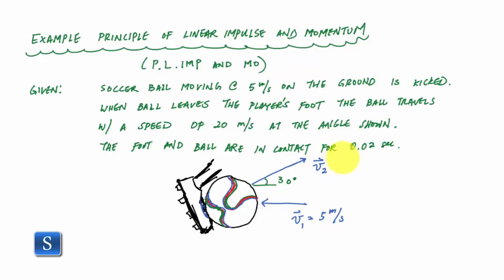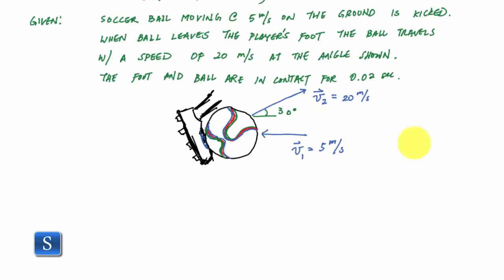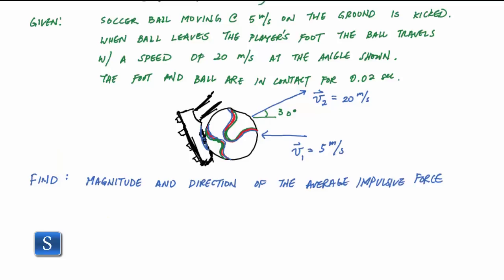The angle here is 30 degrees, and we'll call this v1 for before and v2 for after. What I want to find in this problem is the magnitude and direction of the average impulsive force from my foot on the ball.